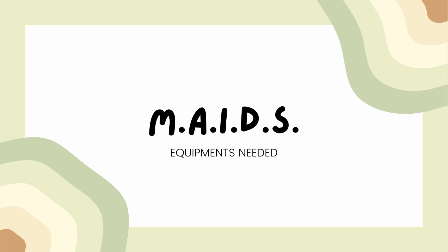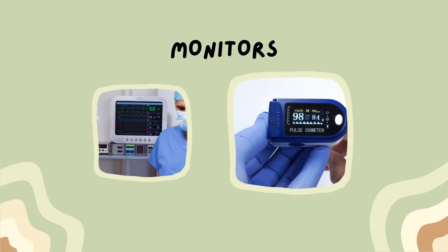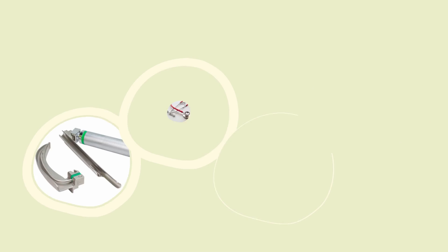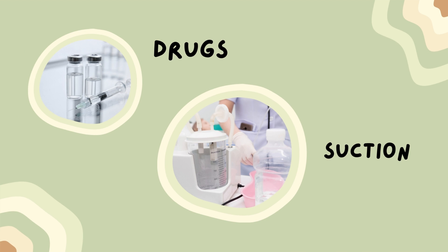For the equipment to be used, remember the mnemonic MADES. M for monitors, which includes cardiac monitors and pulse oximeter. A for airway equipment, such as laryngoscope, stethoscope, endotracheal tubes, and bag valve mask resuscitator. I for intravenous fluids. D for drugs, which includes neuromuscular blockers and sedatives. S for suction, including suction machine and catheter.